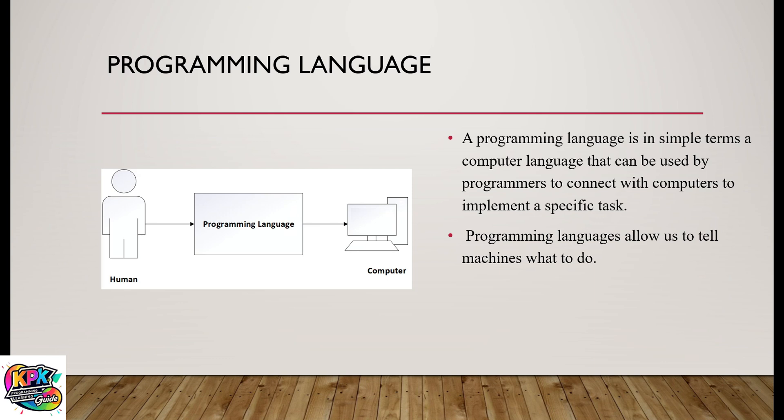Let's look into detail on what a programming language is. A programming language is, in simple terms, a computer language that can be used by programmers to connect with computers to implement a specific task. We mentioned earlier that computers themselves cannot solve problems. They are able to do that by taking instructions from human beings or programmers. A programming language basically allows us to tell a computer or machines what to do.